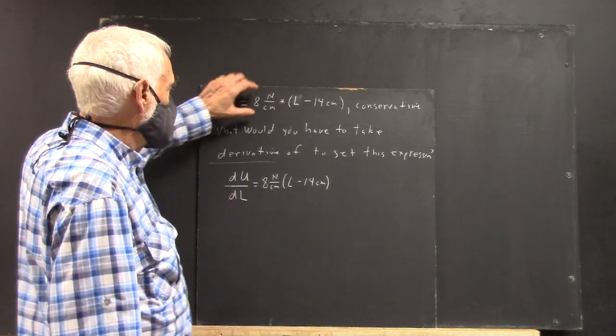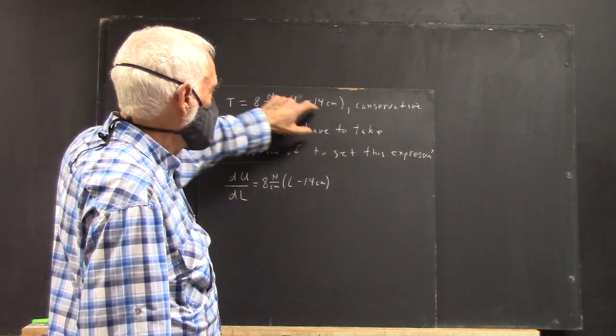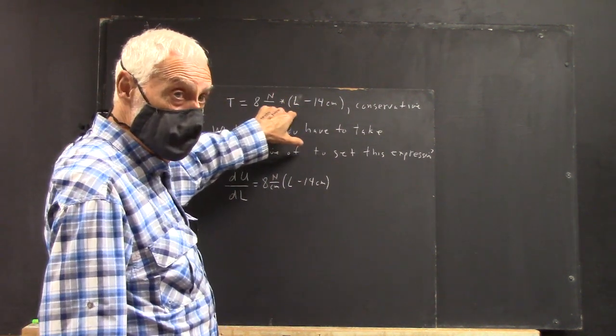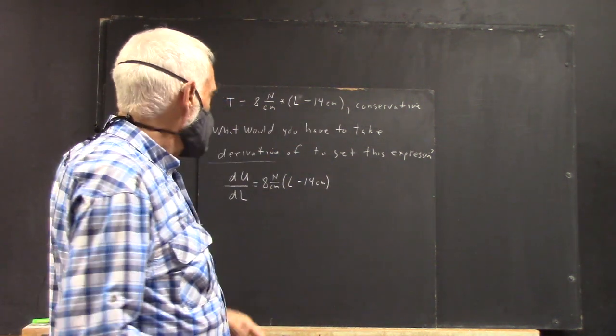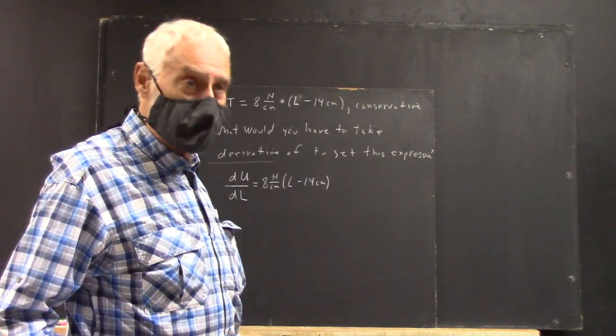Okay, we've got tension, 8 newtons per centimeter times L minus 14 centimeters. The L is the length of a spring or a rubber band or whatever.